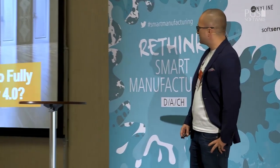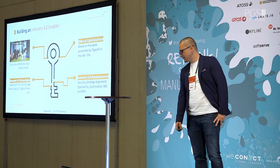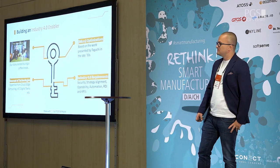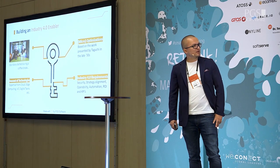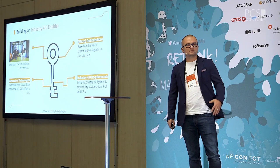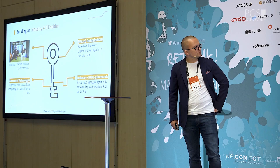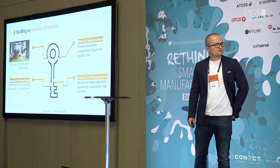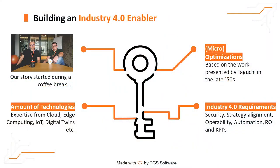Coming to the solution — what is the key to fully enabling Industry 4.0? In my experience it is Mesh Twin Learning and micro-optimizations. There are a lot of works from statisticians from the late 1950s. Based on Taguchi's work, we saw that the best way to optimize processes is by micro-optimizations. I will explain it later, but just wanted to mention that this is based on papers from those earlier times.